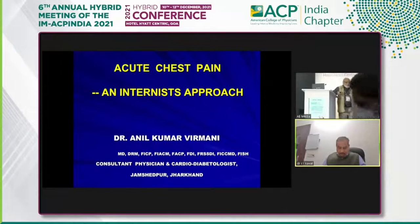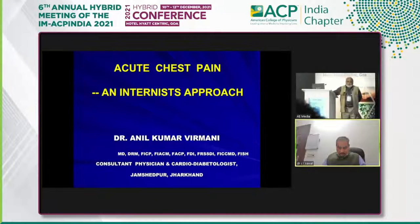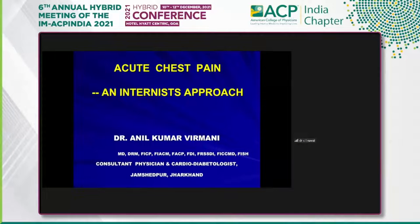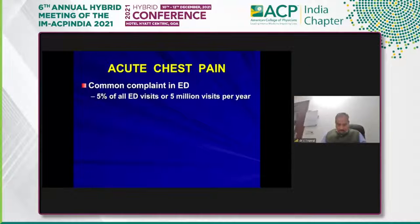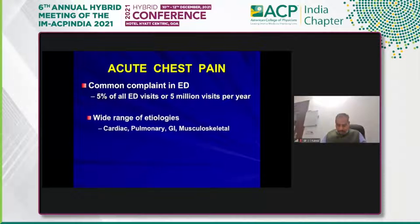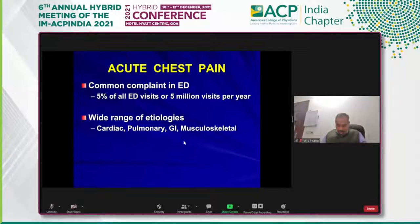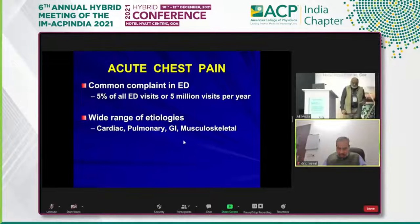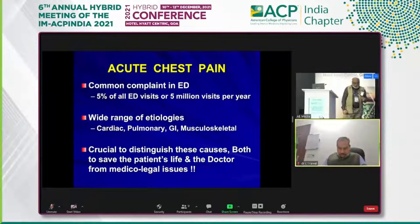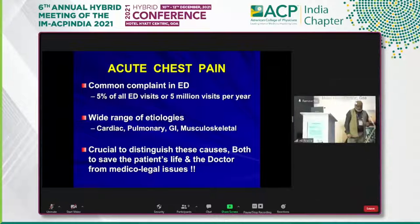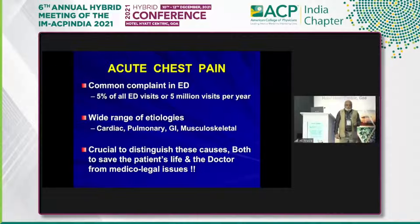Acute chest pain is a very common presentation in family care, and I feel it can make or break careers. I know a number of doctors who are facing severe medical-legal suits because they missed the diagnosis of acute chest pain. It is a very common complaint in the emergency department — 5% of all emergency visits, 5 million visits per year. It has a wide range of etiologies: cardiac, pulmonary, GI, musculoskeletal. It is very crucial to distinguish between these causes, not only to save the patient's life, but also to protect the doctor from medical-legal issues.